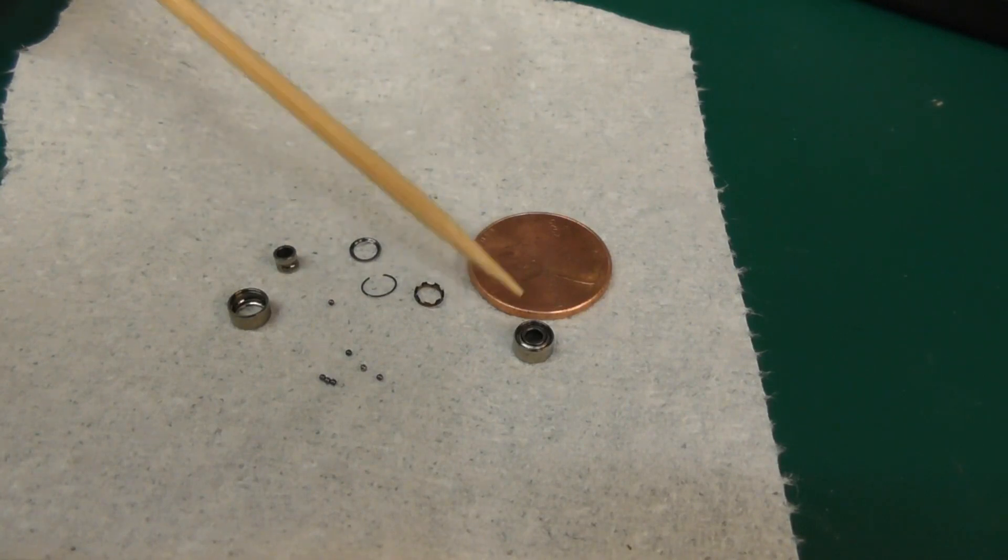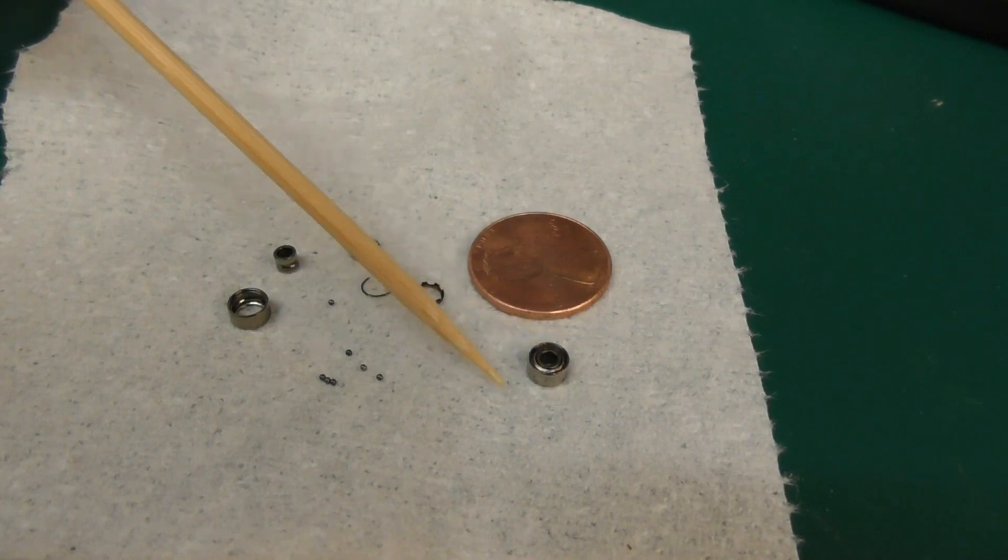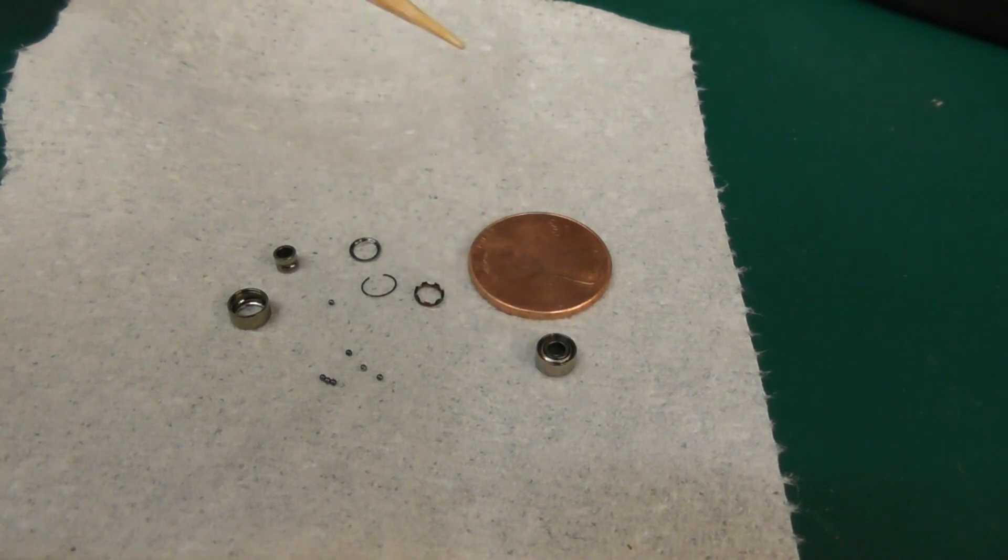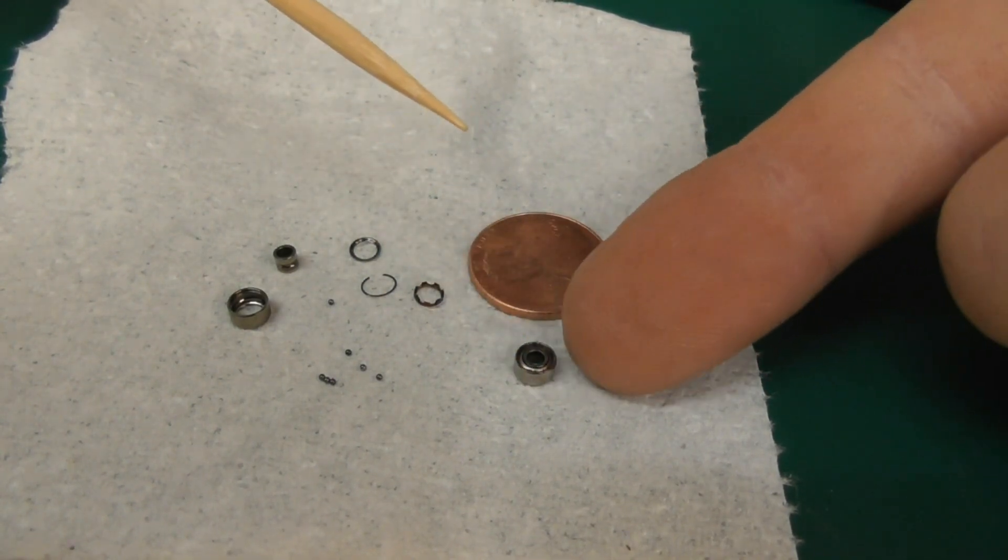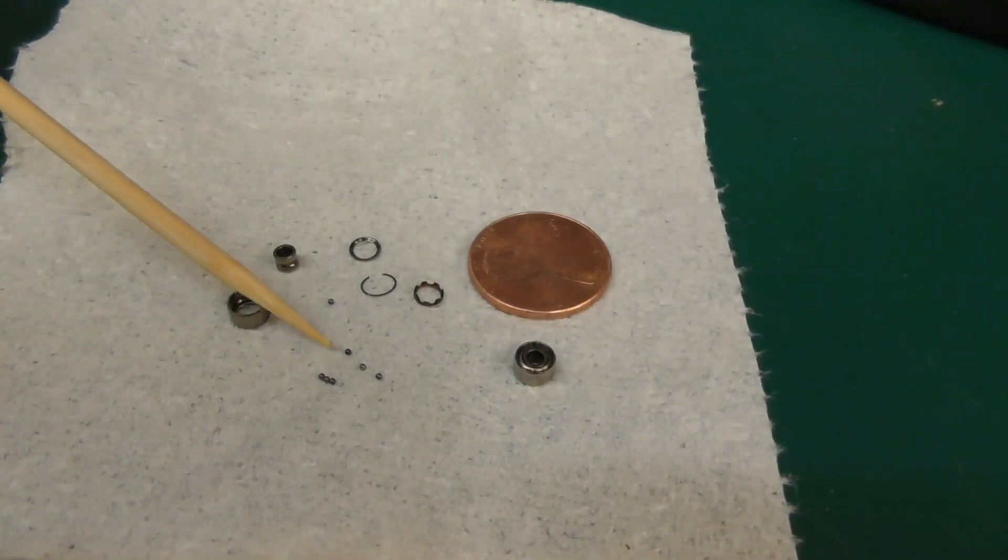The dimensions on these bearings—this penny's here for reference—that bearing right there is a two millimeter bore, it's two and a half millimeters tall, and it is a five millimeter bearing. Here is the end of my finger to show how tiny that is.